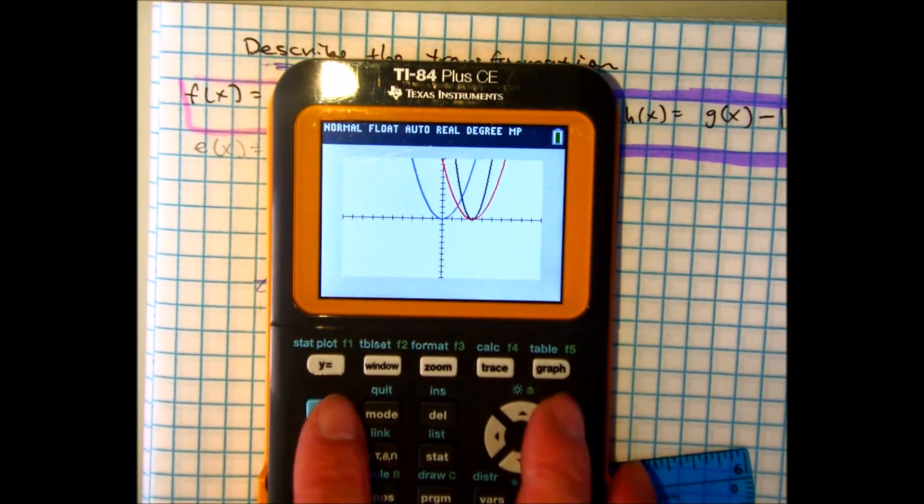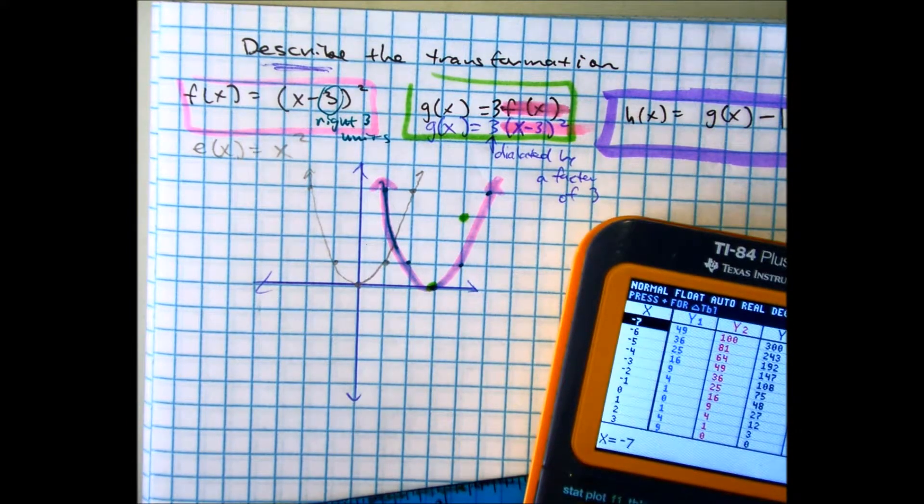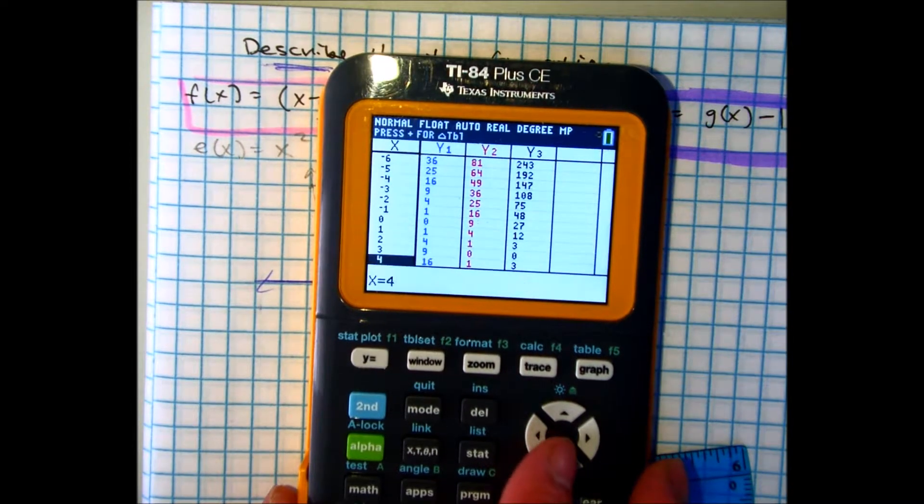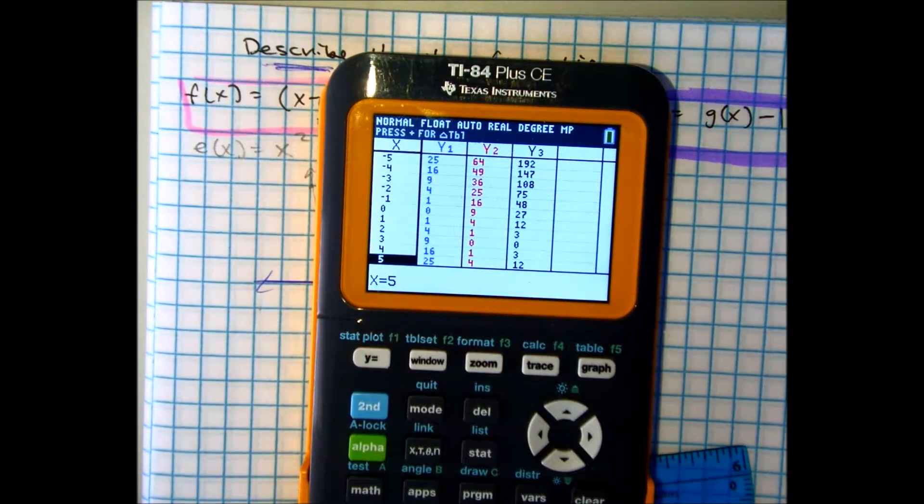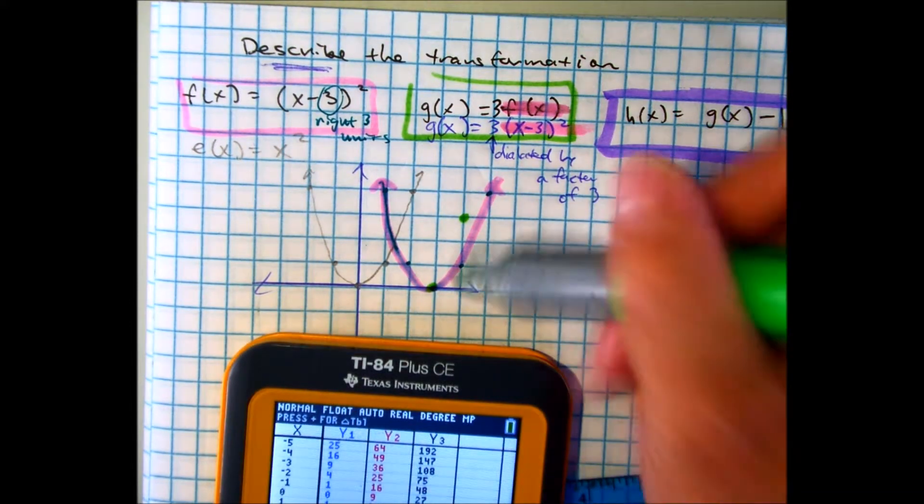So from here, you can use your table of values. So if I go to second table, and I wanted one, two, three, five. So if I go to five, that corner is 12. So it's way up there, just to give you an idea.